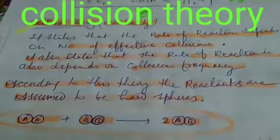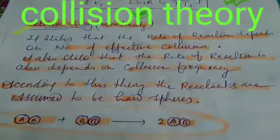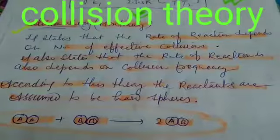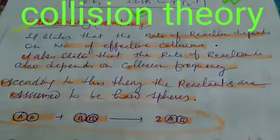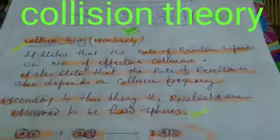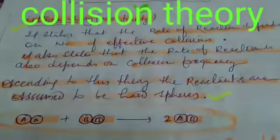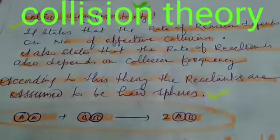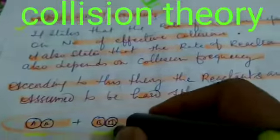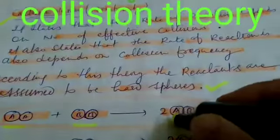Number of collisions per unit time is called collision frequency. According to this theory, the reactants are assumed to be hard spheres. Consider this reaction in which AA is reacting with BB to give 2AB.